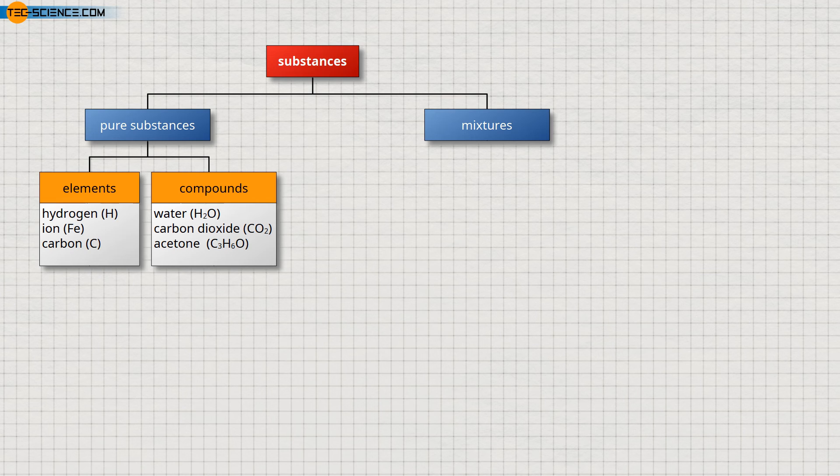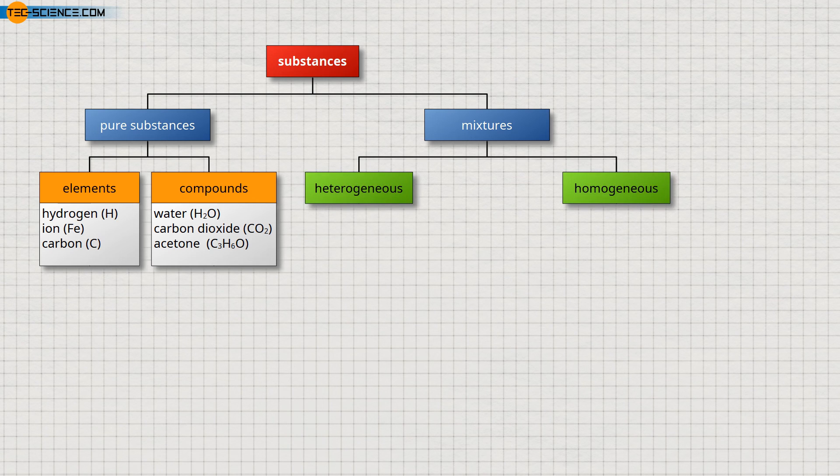If, on the other hand, substances consist of several different types of particles, they are referred to as mixtures. Such mixtures can be further divided into heterogeneous and homogeneous mixtures.